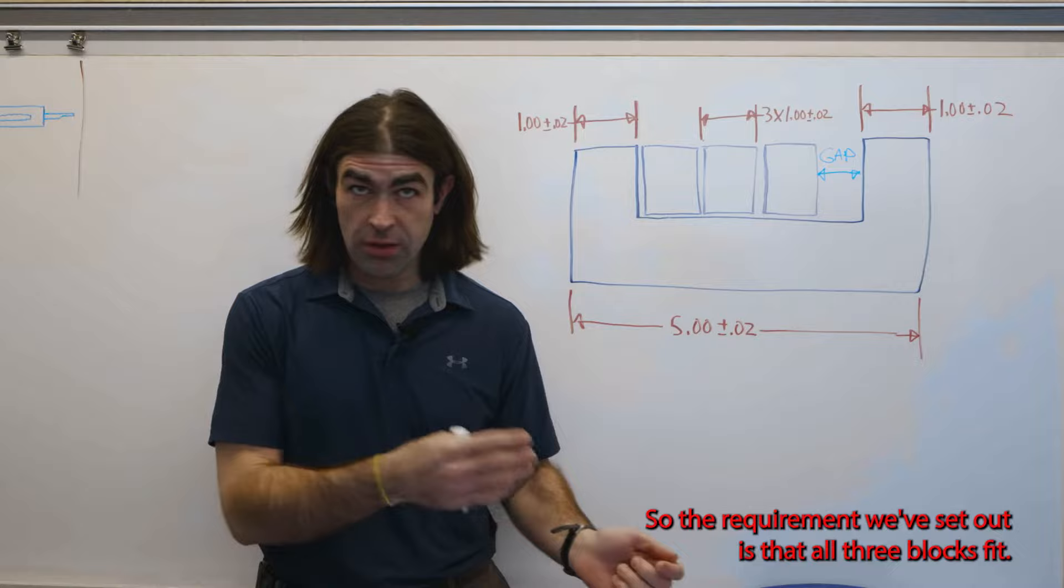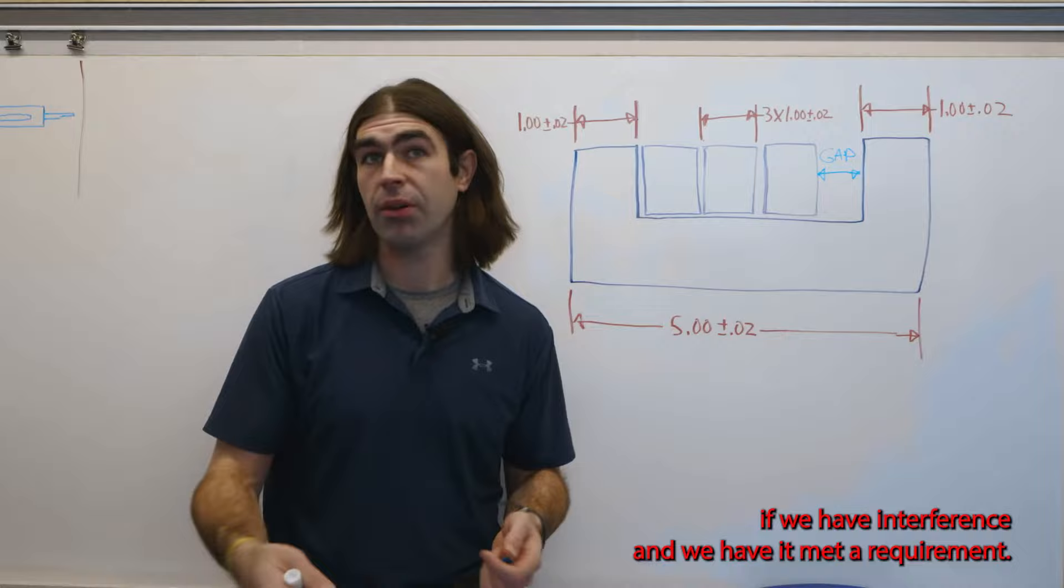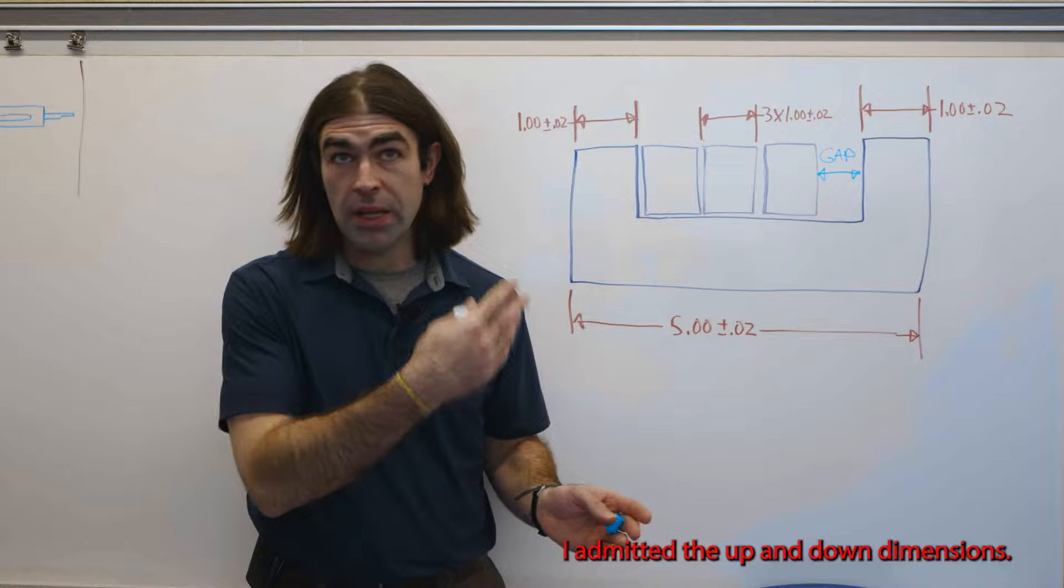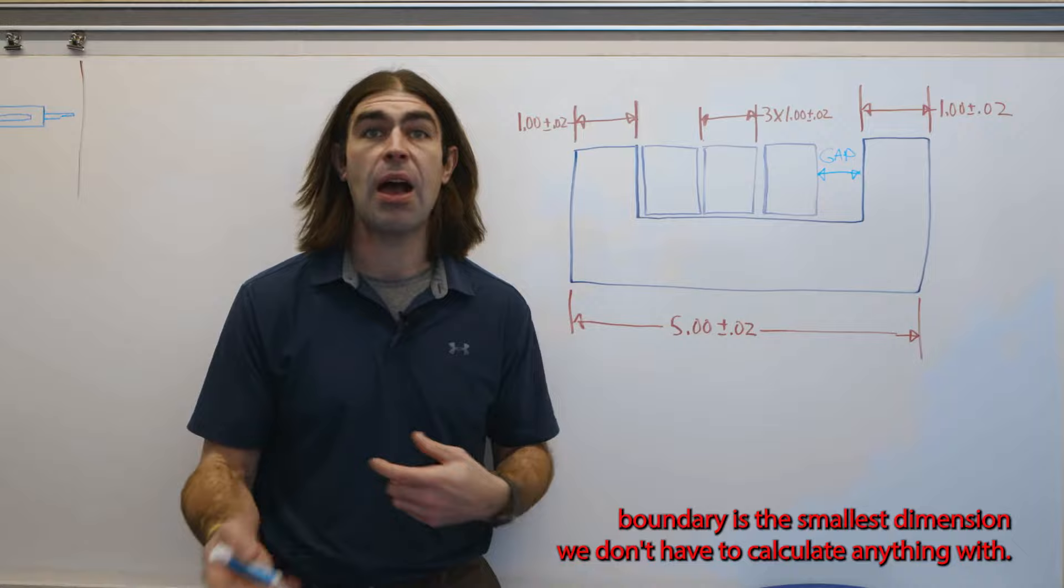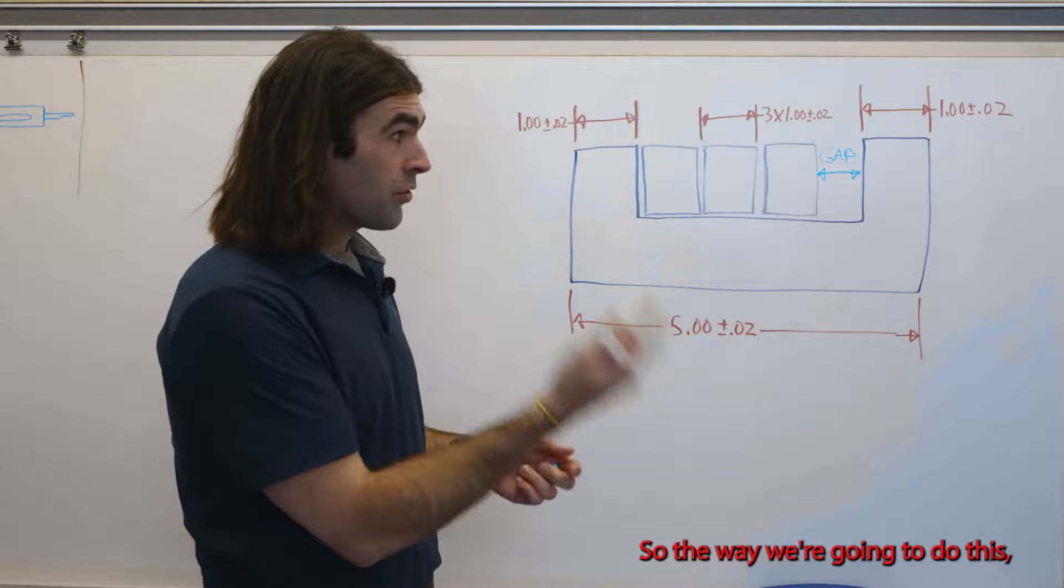So the requirement we've set out is that all three blocks fit, so we have to have clearance. If we have interference, then we haven't met a requirement. So the dimensions on this drawing are all left and right. I omitted the up and down dimensions. They're all plus or minus dimensions. So the outer boundary is the largest dimension. The inner boundary is the smallest dimension. We don't have to calculate anything with GD&T for this example.